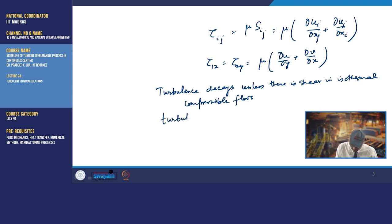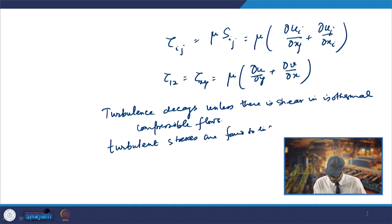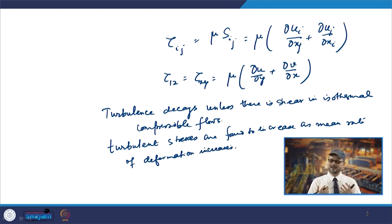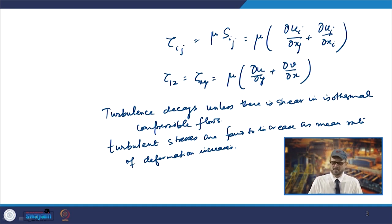Turbulent stresses are found to increase as the mean rate of deformation increases. Based on these two findings, Boussinesq proposed in 1877 that the Reynolds stresses might be proportional to the mean rates of deformation.